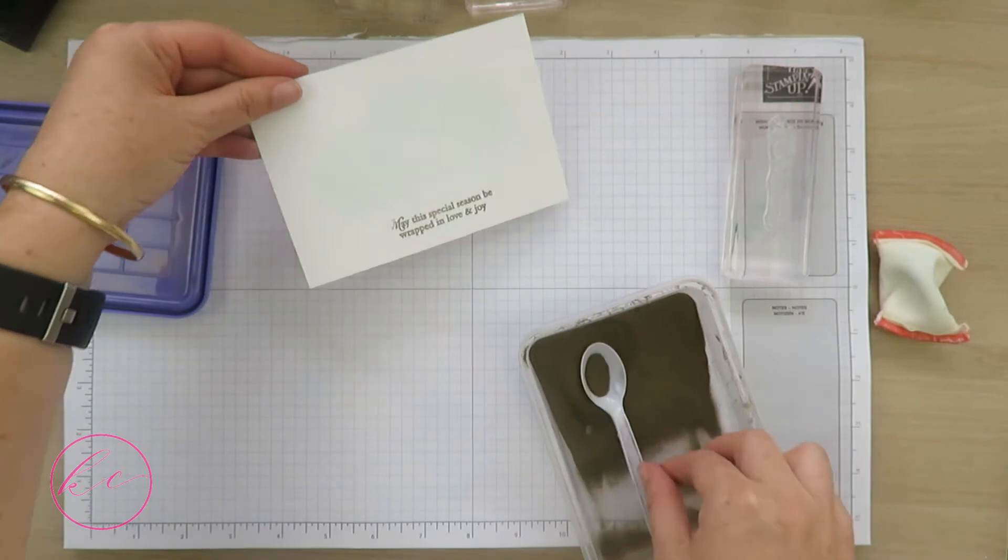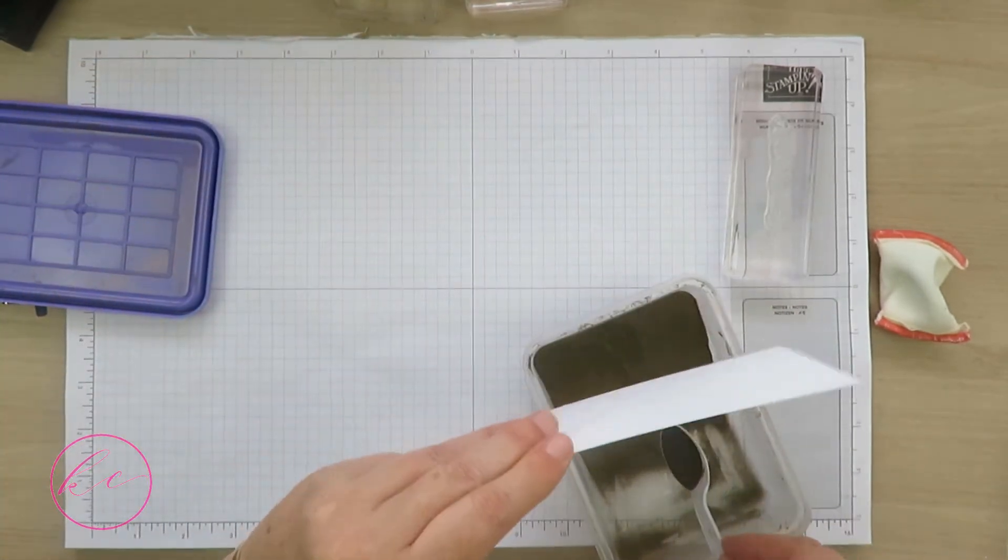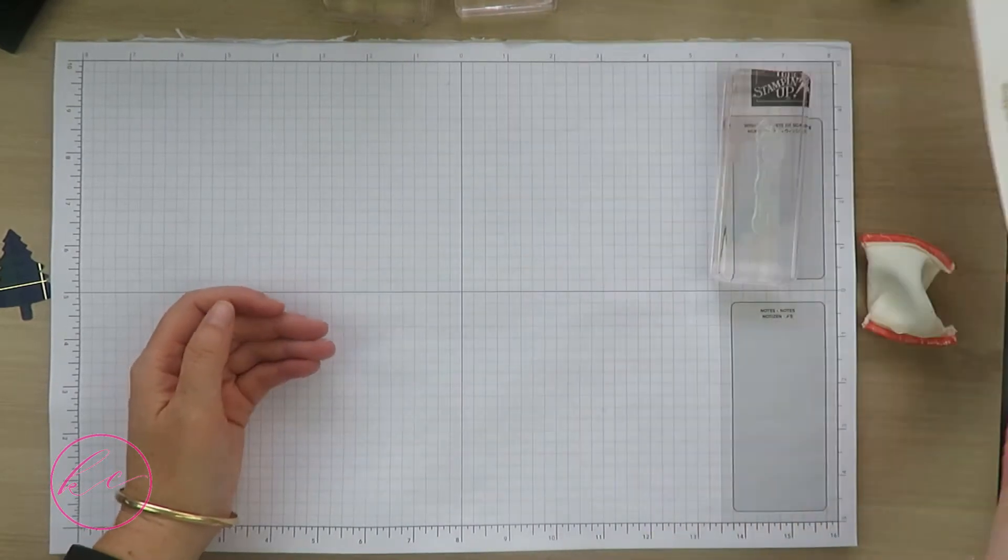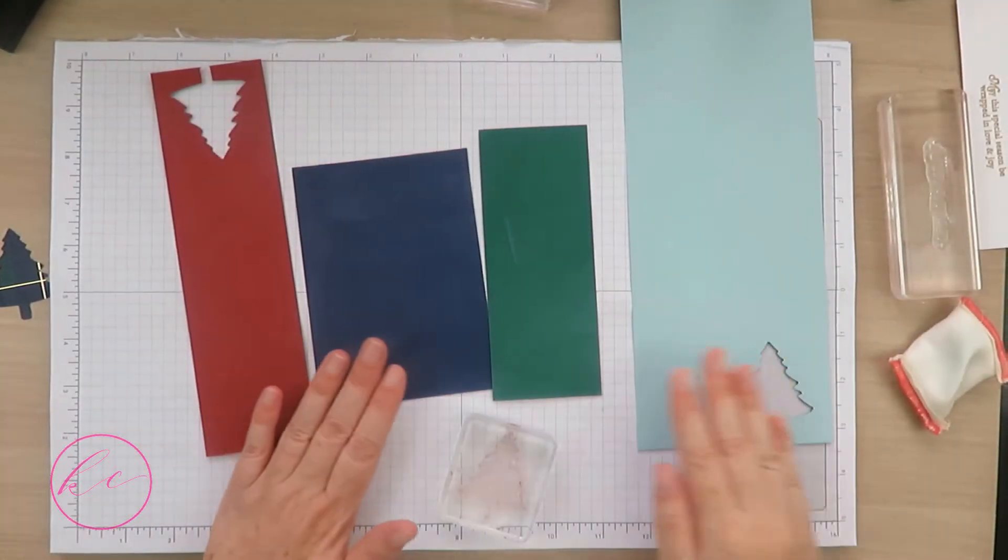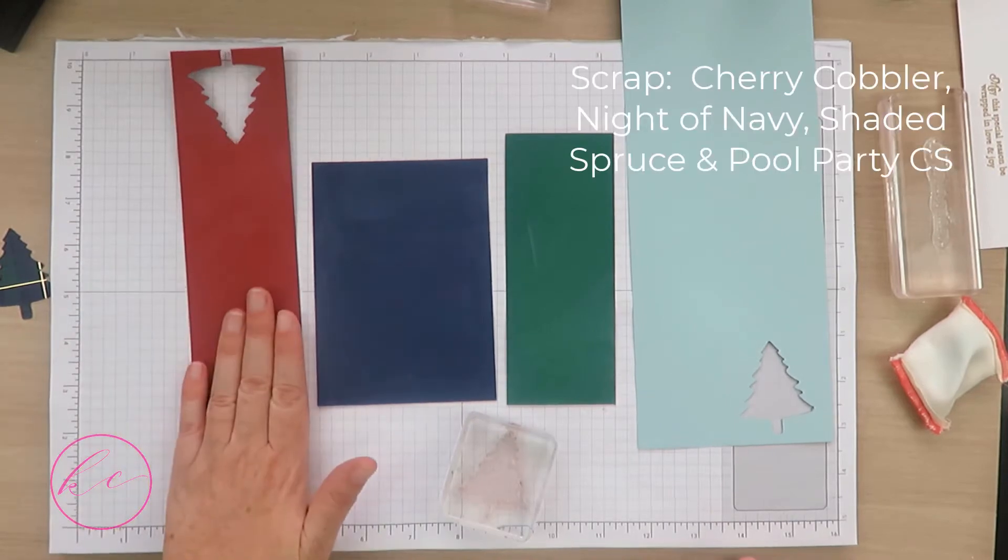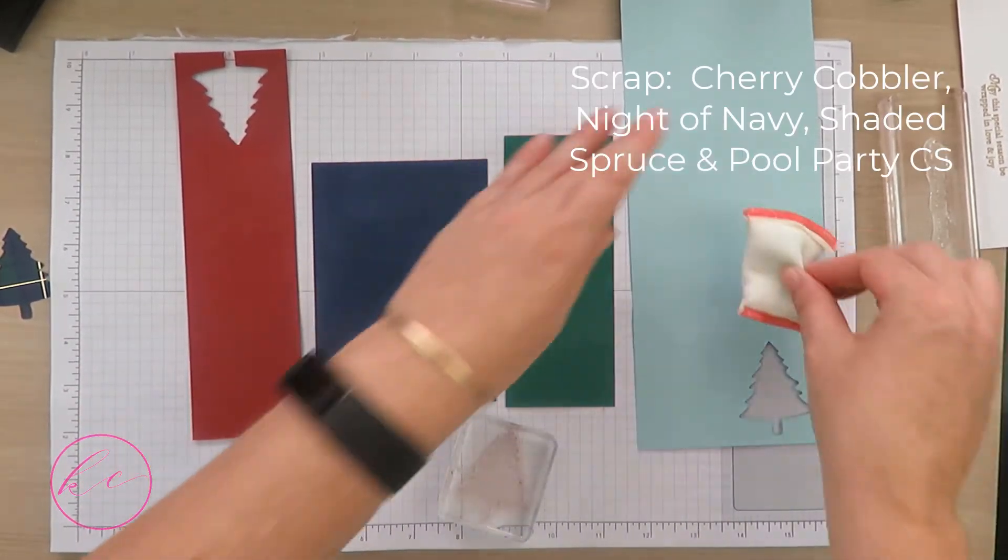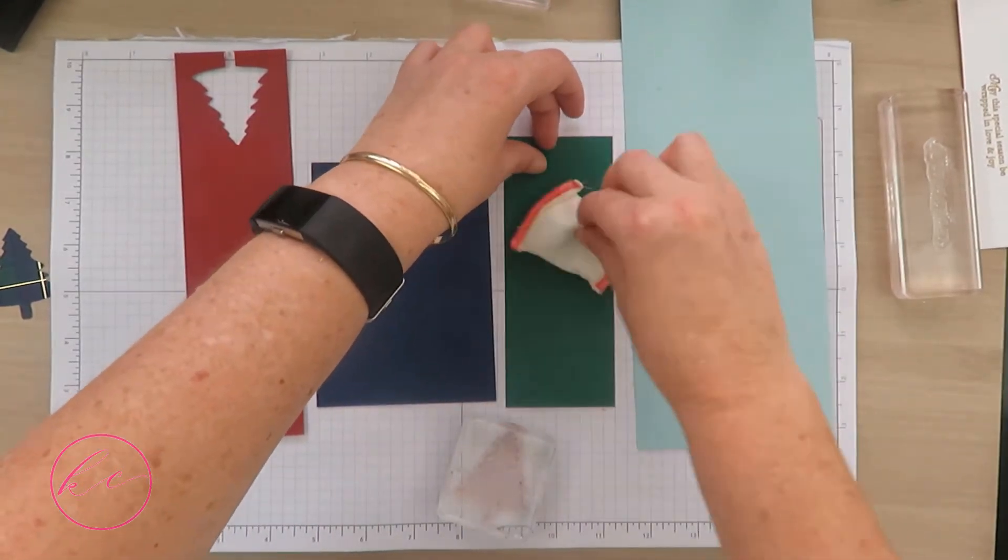Here's my card. I'm going to set that aside for a moment. I have some scrap pieces of cardstock: Cherry Cobbler, Night of Navy, Shaded Spruce, and Pool Party. I'm going to rub my embossing buddy over all of these because we're going to do some heat embossing.